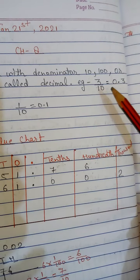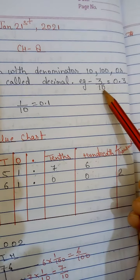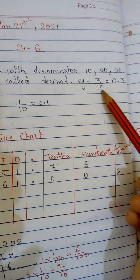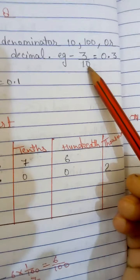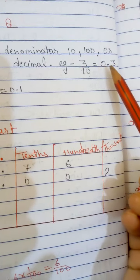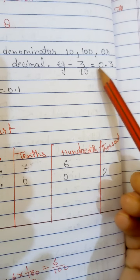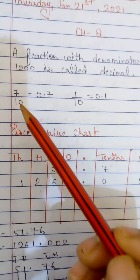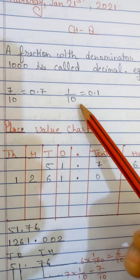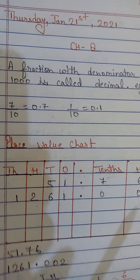For example, three upon ten — that is 3/10 — equals zero point three. So on the right side of the decimal point there is only one digit: zero point three. Similarly, seven by ten equals zero point seven, and one upon ten equals zero point one.